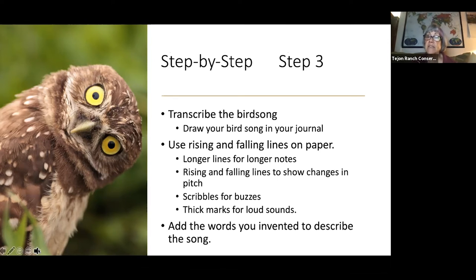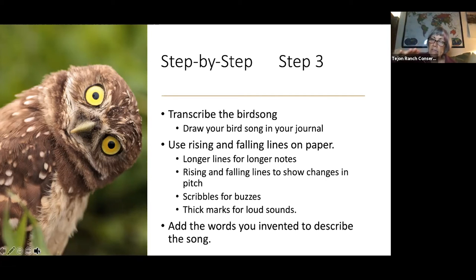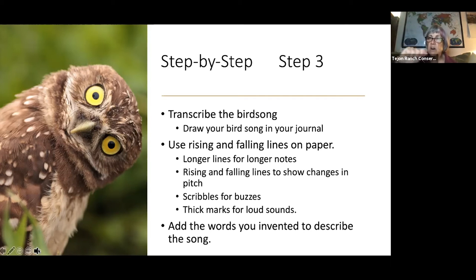The next step will in fact be the writing part. You're going to transcribe that bird song in your journal. You can actually draw the song — your own version of writing music. You're going to use rising and falling lines on the paper: longer lines for long notes, rising and falling lines to show changes in pitch, scribbles to show buzzes, and thick marks to show louder sounds. Then you're going to add those inventive words to describe the sound.